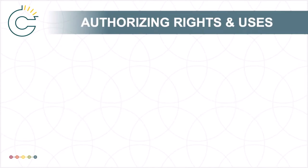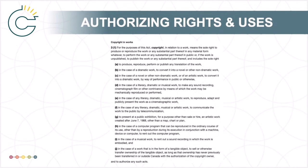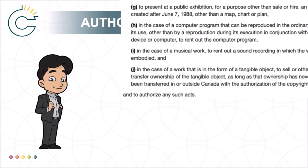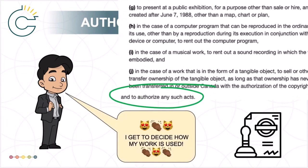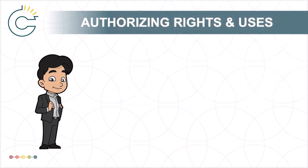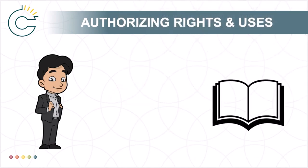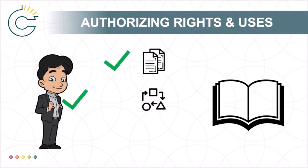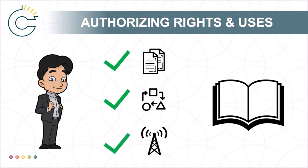Finally, immediately after subsection (j), which covers the last of the ten rights in copyright, there is one more key element to the section. This notes that in addition to these ten rights, the rights holder has the sole right to authorize such acts. The rights in copyright are exclusionary rights, but as the rights holder, you have the ability to separately authorize to groups or other individuals various rights or uses of your work. For example, if you write a novel, you might authorize one person to produce and distribute copies of it, another to create a translation of it, and authorize a third, different set of individuals to disseminate the work over the Internet.